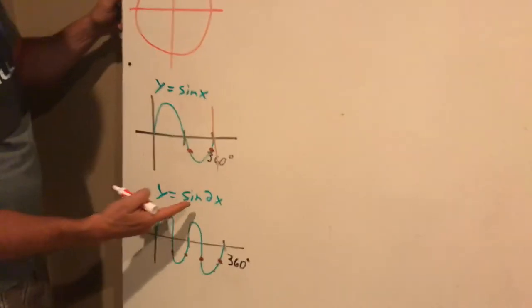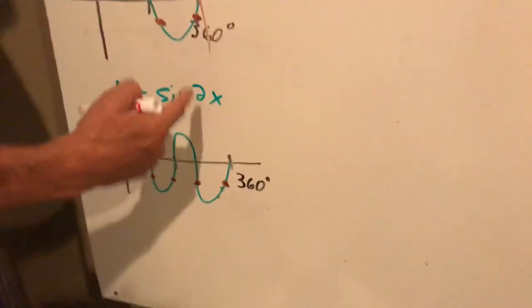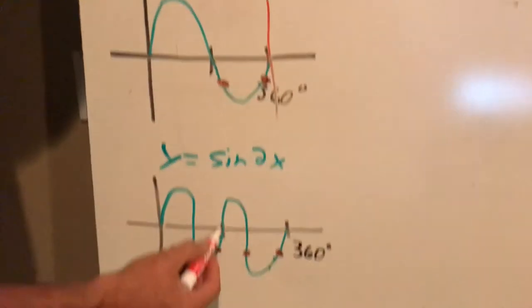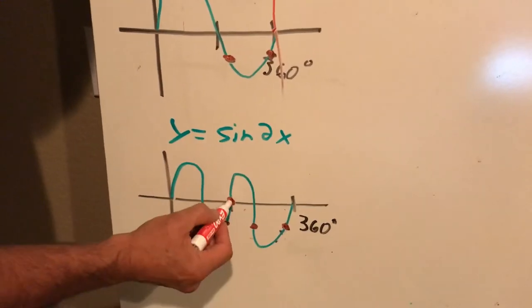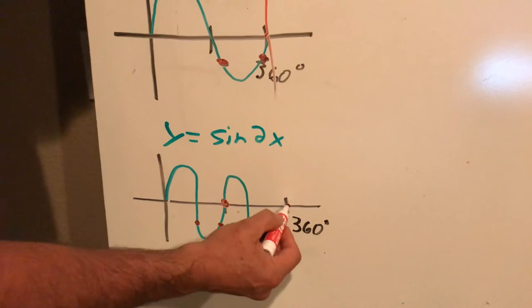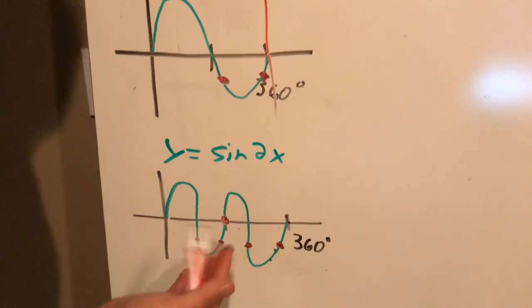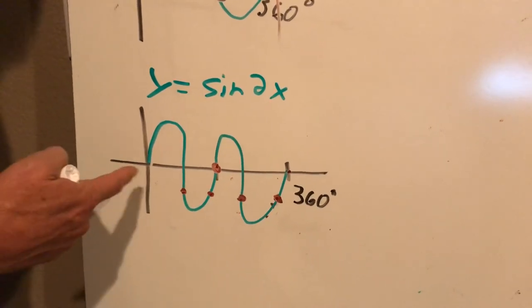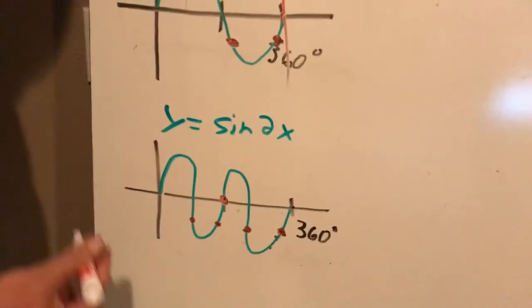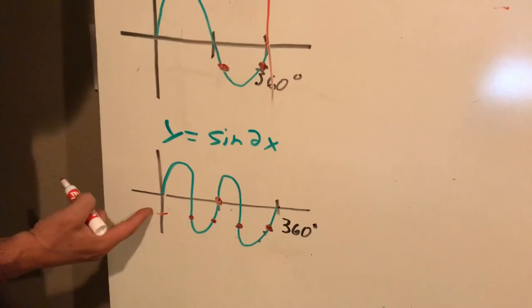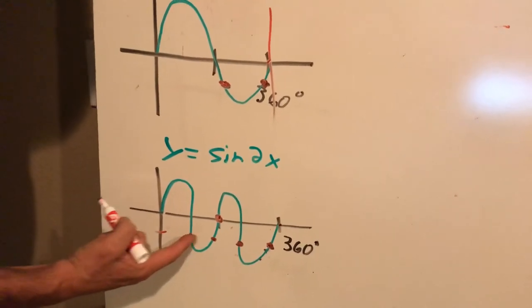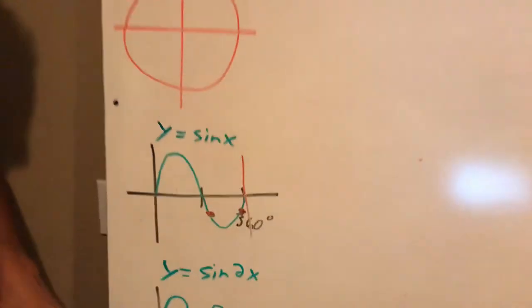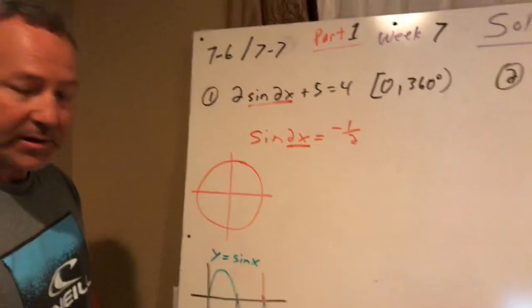But now with sine of 2x, we shrunk it to be half as wide. So instead of finishing at 360, the whole revolution finishes at 180 and another one fits before we get to 360. So now there's twice as much graph squished together like an accordion. I have more answers that equal to negative 1 half. Negative 1 half would be like down here. And these are like kind of our two regular ones that were squished over. And there are two more now.